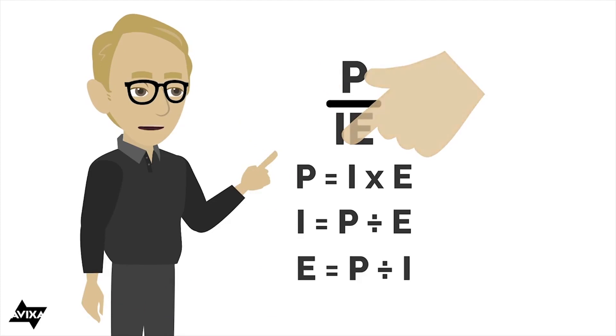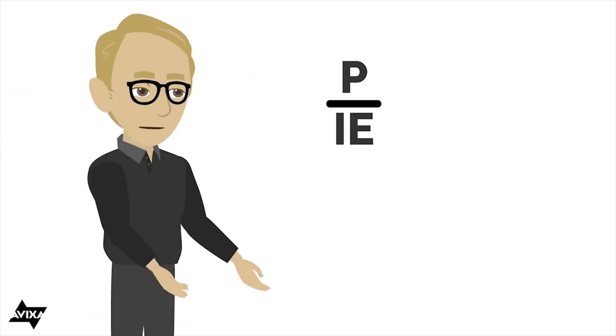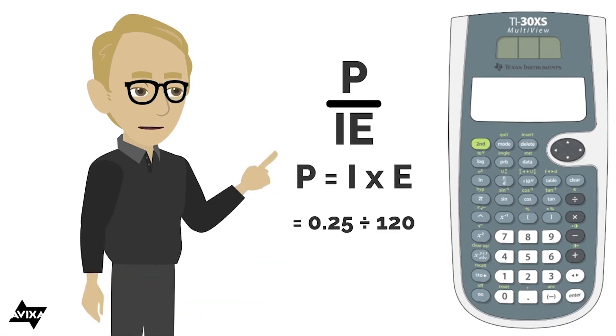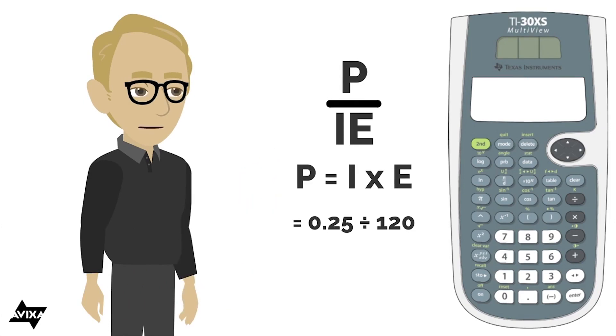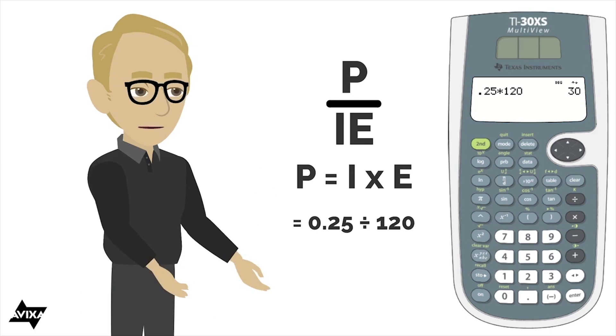Let's do three quick little examples with this. Let's say I want to solve for power, and I'm going to do current times the voltage. The current, let's say it is .25 amperes worth of current, and let's say it's 120 volts. So .25 times 120. Power there consumed in the circuit would be 30 watts.